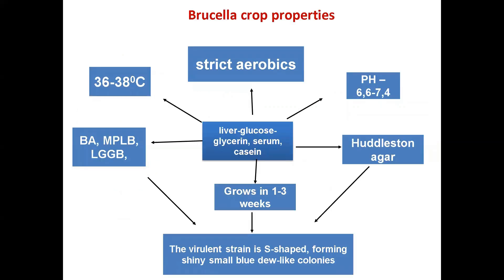Brucella are strict aerobes, but when initially isolated they grow better in an atmosphere of 5–15% carbon dioxide at 36–38°C and a pH of 6.6–7.4. For their cultivation, media with the addition of blood, blood serum, glucose, and glycerin are used, including blood agar, mid-peptone liver broth, liver glucose glycerol broth, liver glucose glycerol agar, and Hedlsen liver agar.